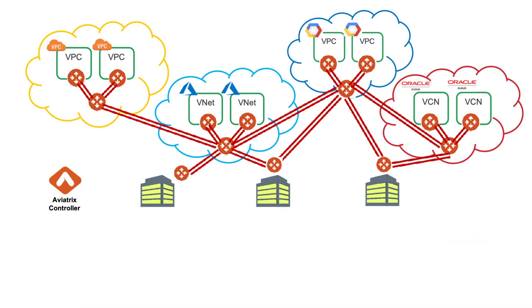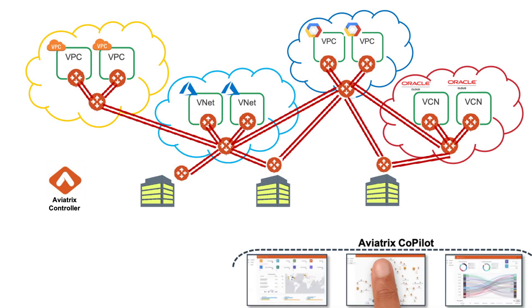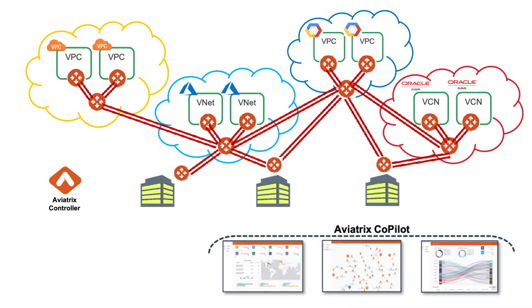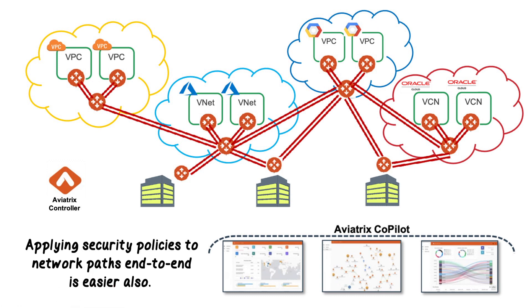Organizations can then use Aviatrix Copilot to gain insights into events at the application, security, and network layers. And applying security policies to network paths end-to-end is easier also. No need to stitch together policies across multiple clouds.